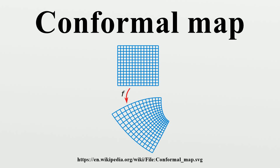Since a one-to-one map defined on a non-empty open set cannot be constant, the open mapping theorem forces the inverse function to be holomorphic. Thus, under this definition, a map is conformal if and only if it is biholomorphic. The two definitions for conformal maps are not equivalent. Being one-to-one and holomorphic implies having a non-zero derivative.